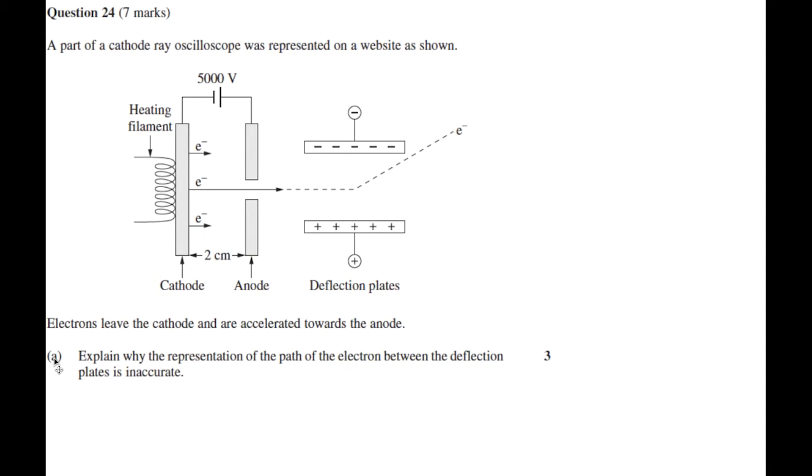You start off with this question, it's a seven mark question with three parts a, b and c. We start with a diagram and in many respects it's a familiar diagram, however the diagram has some flaws in it. The question asks: explain why the representation of the path of the electron between the deflection plates is inaccurate. It's worth three marks and asks for explain, so it's not just good enough to identify a number of inaccuracies. In fact there are three inaccuracies, so we need to identify those and explain why they're incorrect.